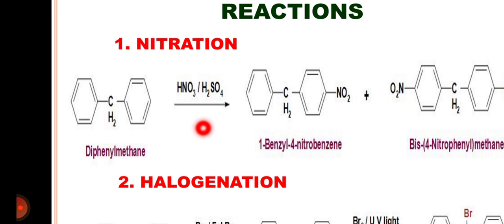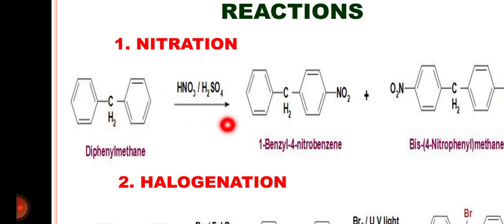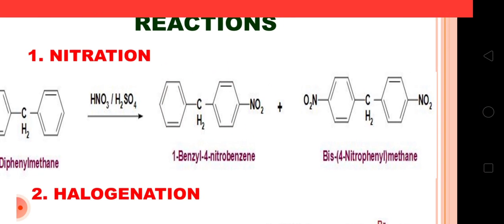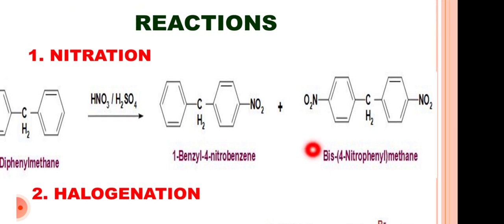As we know, the para products are the major products. The nitronium ion, which is generated by the reaction of nitric acid and sulphuric acid, will attach at the para position of the benzyl group, and thus we get the formation of 1-benzyl-4-nitrobenzene. This is the mono-substituted product. We also have a disubstituted product, where the second nitro group attaches at the para position of the second benzene ring, giving 4,4-dinitro-diphenylmethane.